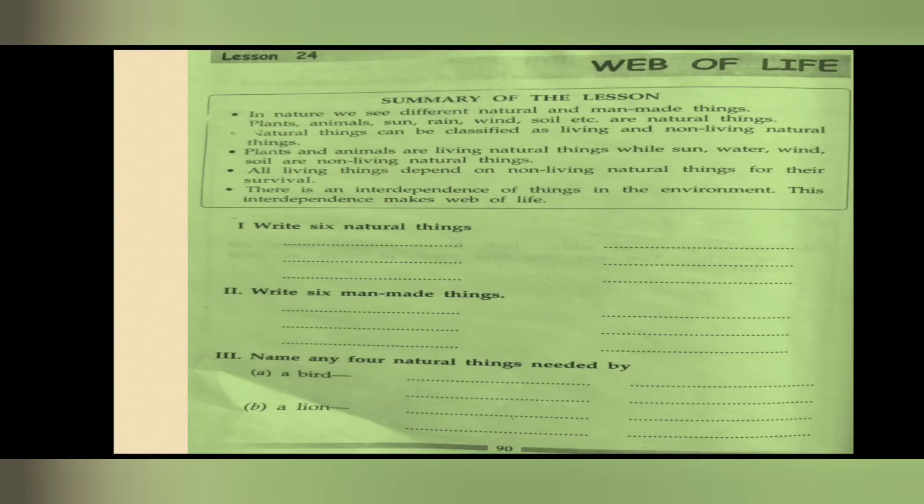Right, so this is the lesson that we have understood. Now there are some exercises that you have to solve. Write six natural things - you can write plants, animals, sun, rain, wind, soil. Six man-made things - there are a lot of things in your surroundings that man has made.